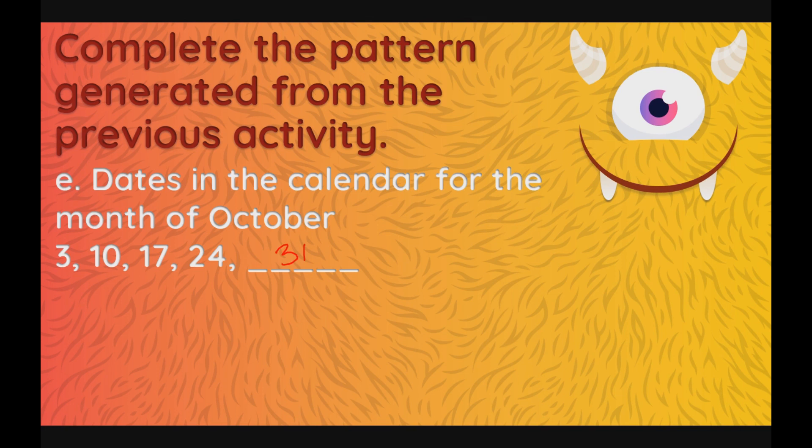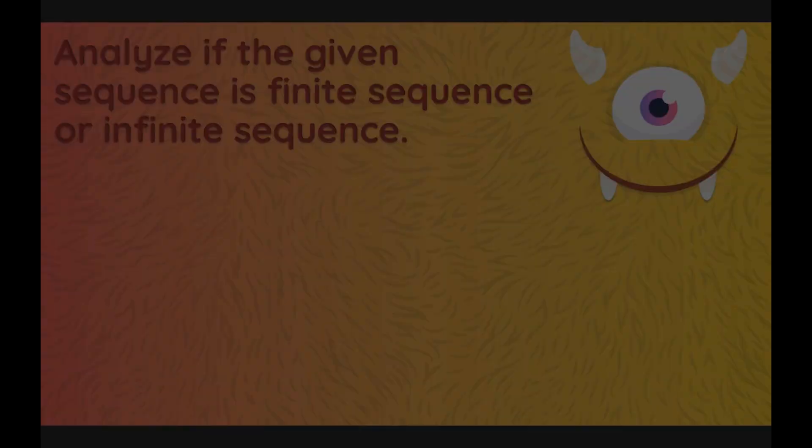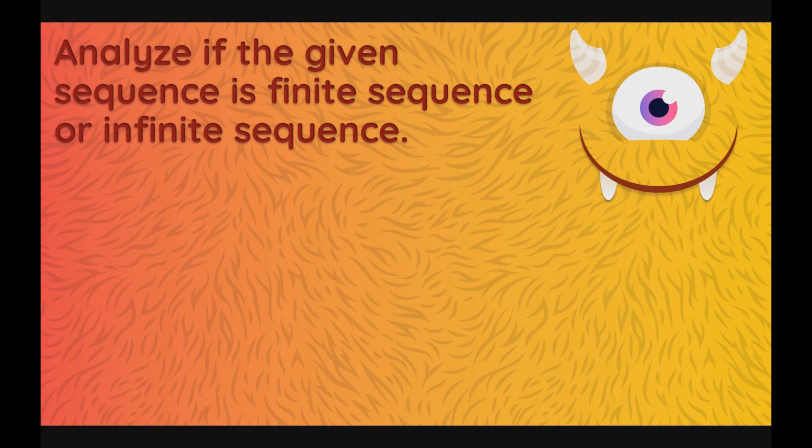So as we can observe, there is a pattern being followed. There is a rule — specifically here, plus 7 — and it goes up to 31 only, because this is a calendar.